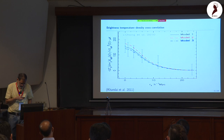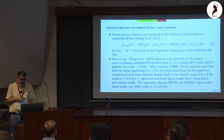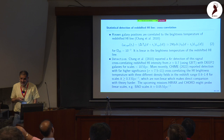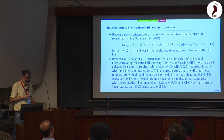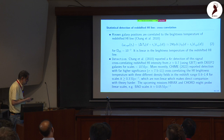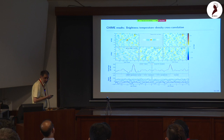The main recent result is from CHIME. In 2022, they detected using exactly the same cross-correlation method, achieving 7.5 to 11-sigma significance. CHIME, like GBT, has poor angular resolution with a beam of a few arcminutes. They performed the cross-correlation in two dimensions and cross-correlated HI brightness temperature with three different optical density fields over the redshift range 0.8 to 1.4.